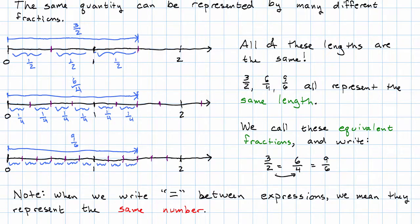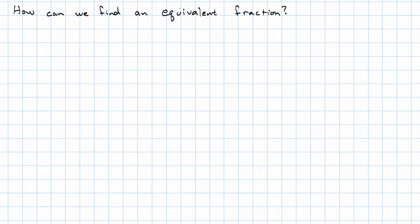We're saying that these two fractions represent the same number, and that these two fractions represent the same number. That must mean that all three fractions represent the same number as each other. When we write a string of equal signs like that, we mean that all of the expressions involved represent the same number. How can we find a fraction equivalent to a given fraction? Let's look at another example. Let's say we have the quantity 2 thirds, and we want to know how many sixths that's equivalent to.